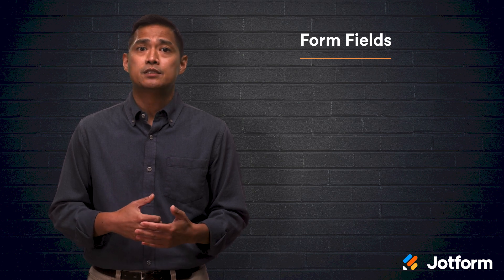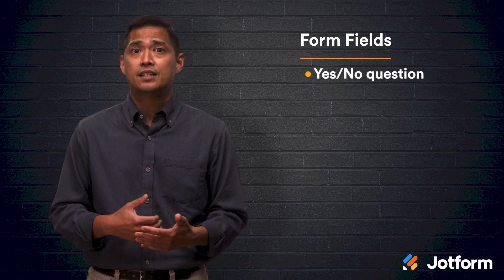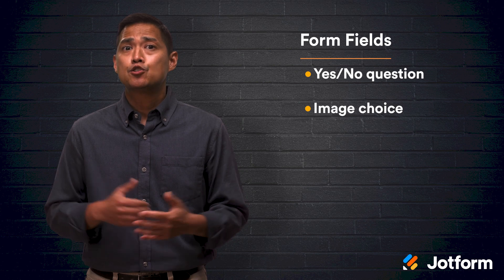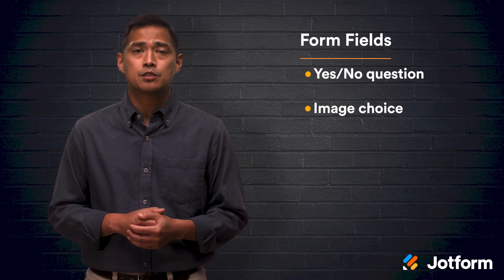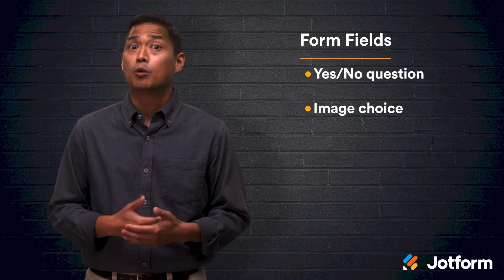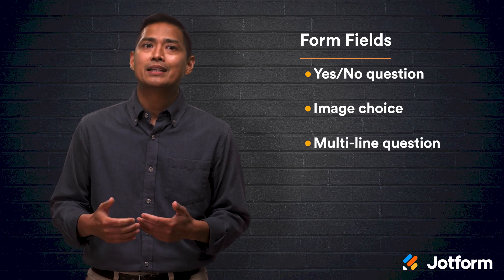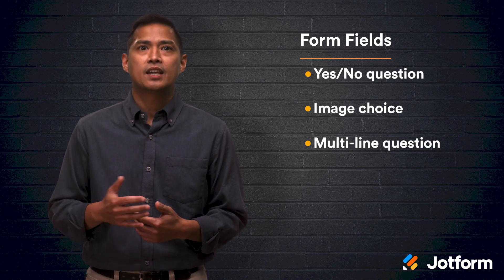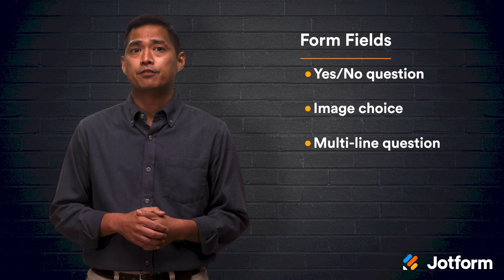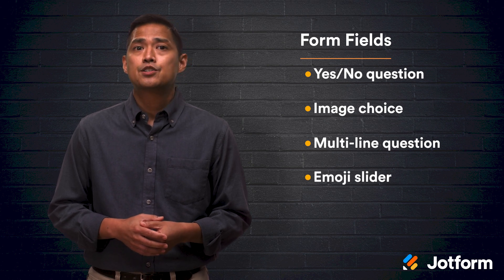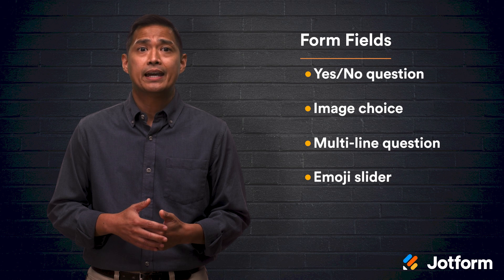Form fields are available only in Card Forms. If you want a straightforward field to answer yes or no with, or anything that indicates a positive or negative response, use yes or no question fields. There's the Image Choice Form field that uses images configured to behave like radio buttons, where only one choice is allowed, or checkboxes where multiple selections are allowed. The multi-line question field allows you to add more than one field in a single card — it allows text box, email, number, and drop-down fields to be used. The last field in Card Forms is the Emoji Slider, an intuitive slider with emojis that uses icons for scale ratings.